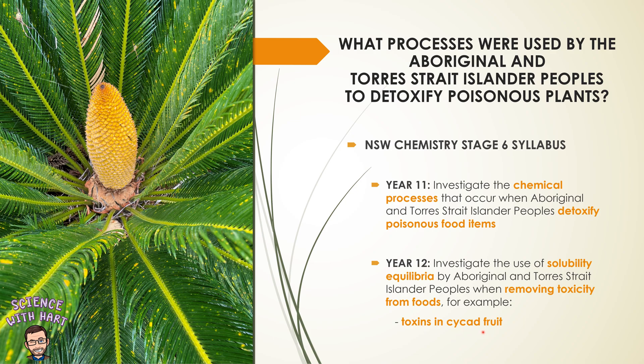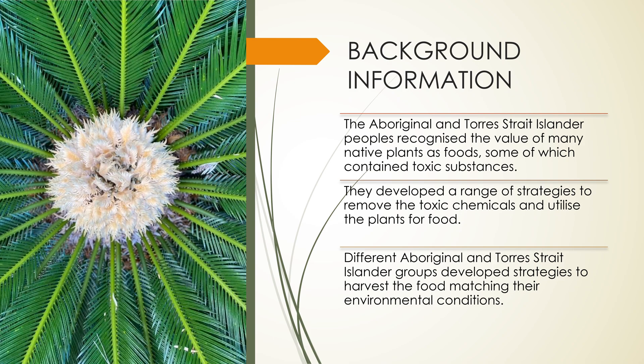We will be looking at the cycad fruit specifically in this video. The Aboriginal and Torres Strait Islander peoples recognised that many of the native plants around them could be used as food, but some of those plants contain toxic substances and therefore could not be used as food. To overcome this problem, they developed a range of strategies to remove the toxins and enable them to use the plant as food. Interestingly, some groups seem to have developed different strategies, and it's possible that the strategy they developed matched their environmental conditions — based on the resources they had available, it would determine the technique used to remove those toxins.